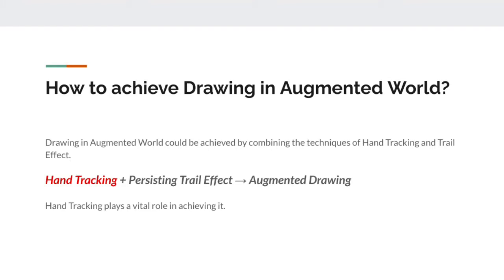Now let's get into the topic: how to achieve drawing in the augmented world. This can be achieved by combining two different techniques. The two techniques are hand tracking and trail effect, which we'll cover in detail in upcoming slides. The key point to note is that hand tracking plays a crucial role in achieving augmented drawing.